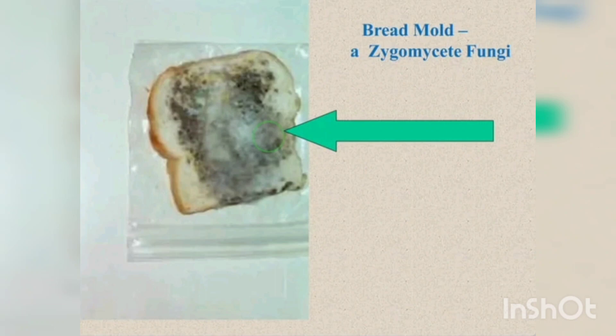Let us look at the salient features of Zygomycotina. The thallus is filamentous. Hyphae are branched, aseptate, and multinucleate — or we can call it cenocytic. Septa are formed in old mycelia only to cut off reproductive structures and to seal off injuries. The hyphal wall is made up of a chitin and chitosan complex.